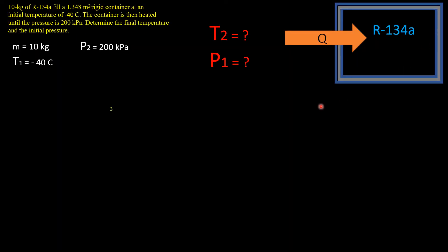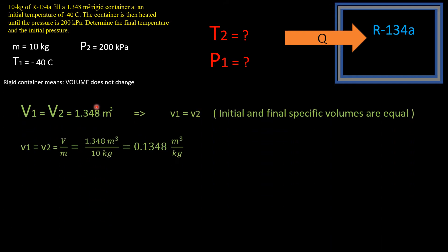Let's minimize the problem statement and start our thinking process by looking at the volume. It says a rigid container, which means the volume will not change throughout this exercise. V1 will equal V2, and the actual number is given in the problem: 1.348 cubic meters.